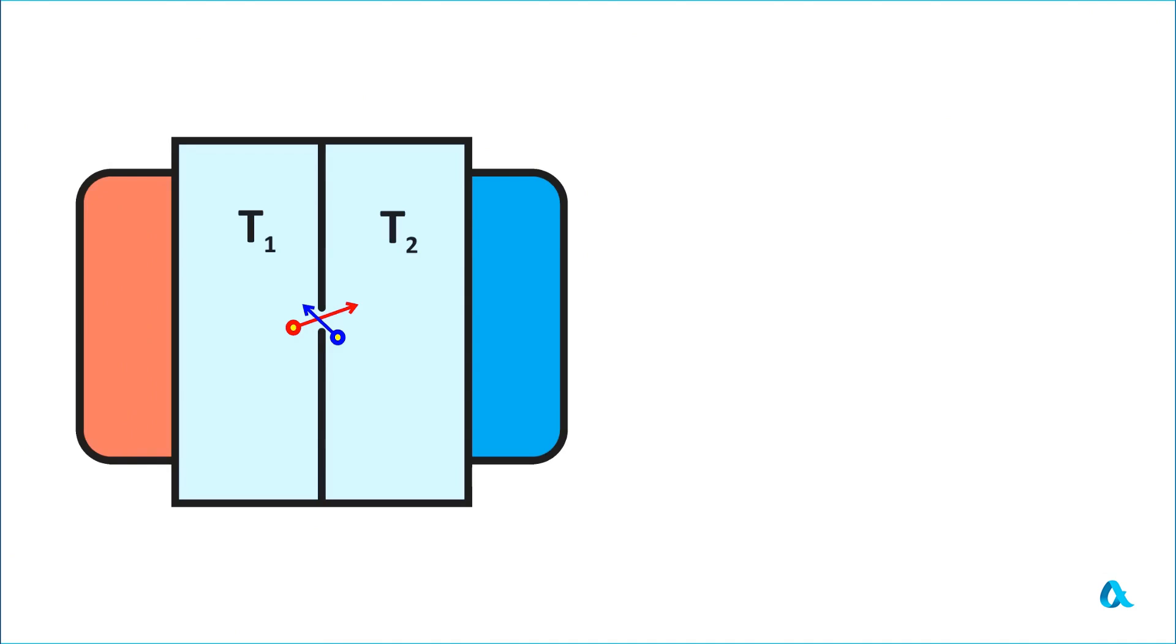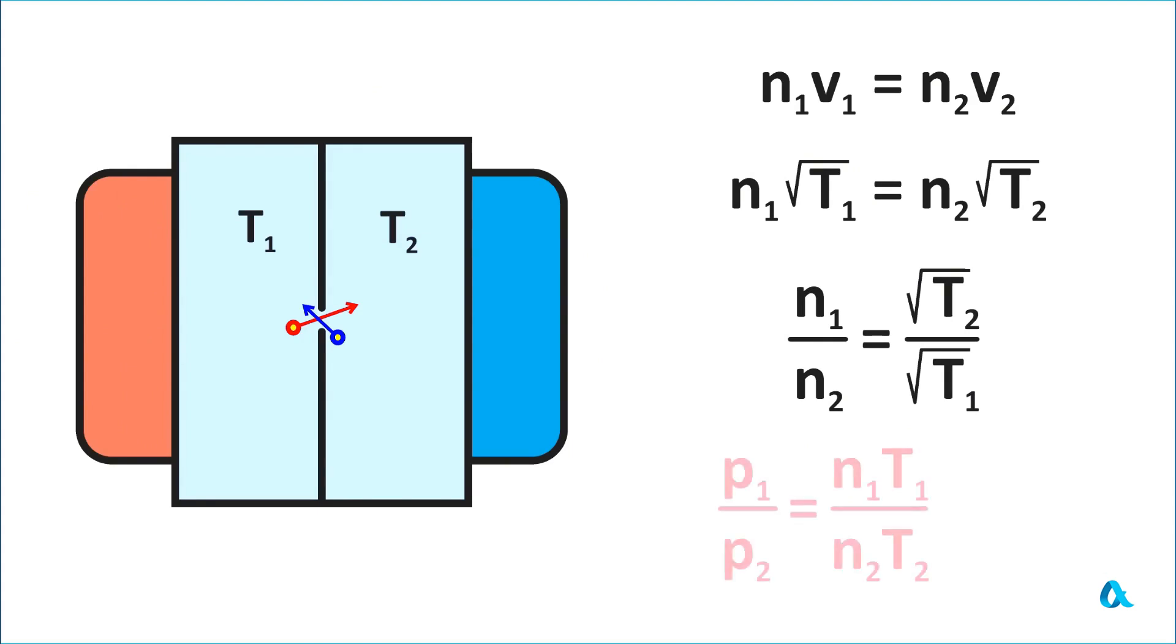At equilibrium, the flows of molecules passing through the holes in both directions will be equal. The flow is proportional to the concentration of molecules and their average thermal speed. And the speed in turn is proportional to the square root of the temperature, from which we derive the following equality. It turns out that the concentrations are inversely proportional to the square roots of the temperatures. And the pressure is proportional to the product of concentration and temperature. Substituting the concentration ratio here, we find that the pressure is related to the square roots of the temperatures.